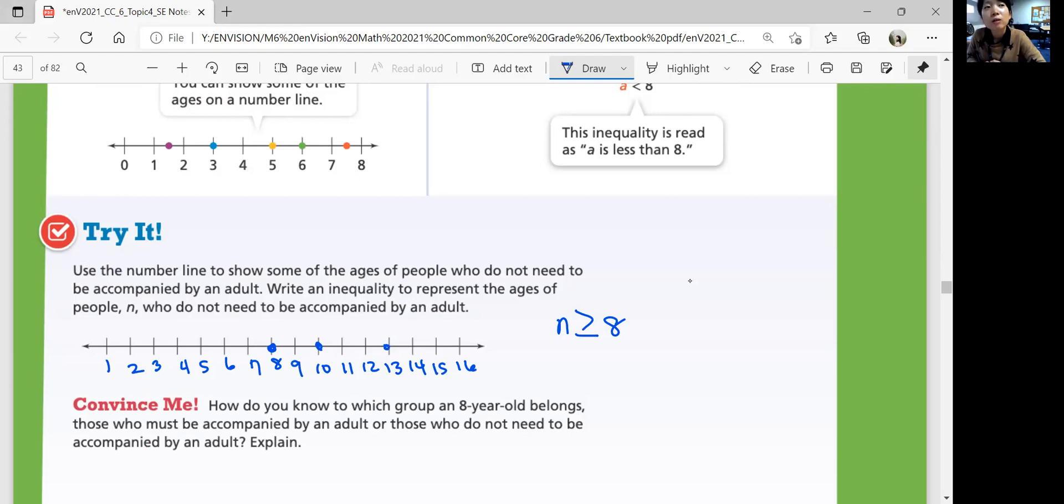Convince me. How do you know to which group an 8-year-old belongs? Those who must be accompanied by an adult or those who do not need to be accompanied by an adult. How do you know? An 8-year-old belongs in the group of those who do not need to be accompanied by an adult because the phrase under the age of 8 indicates that 8 is not included. Okay?